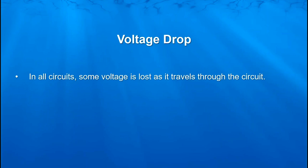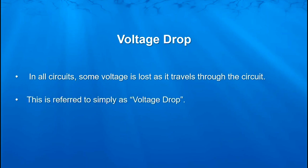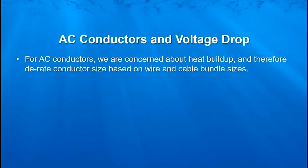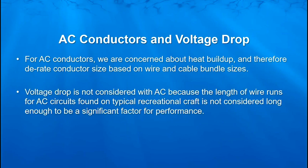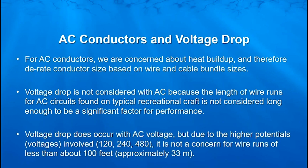Voltage drop is mainly a DC issue. As mentioned before, in all circuits some voltage is lost as it travels through the circuit, and is referred to simply as voltage drop. For AC conductors, we are concerned mostly about heat buildup — and that is the crux of our derating system for the conductors, based on the wire itself and how many wires are bundled together. In our applications, voltage drop is not considered with AC because the length of wire runs for AC circuits found on typical boats is not considered long enough to be a significant factor for performance.